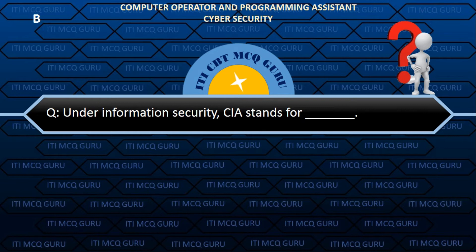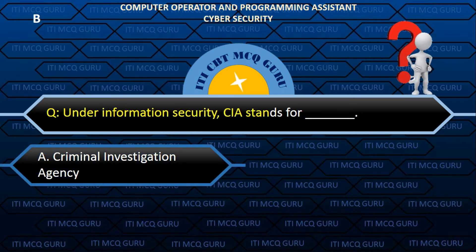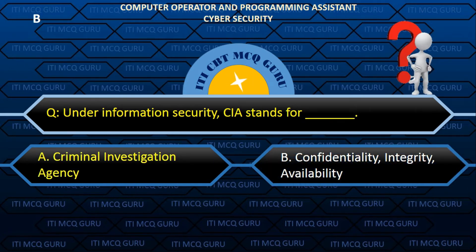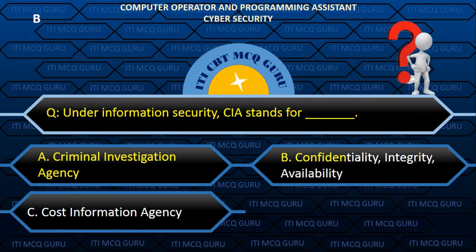Under Information Security, CIA stands for — Answer: B. Confidentiality, Integrity, Availability.